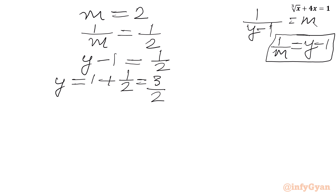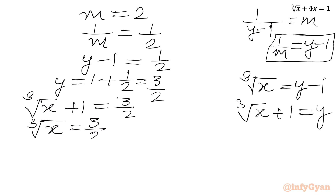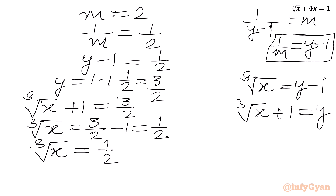Now y was also our substitution: cube root x equals y minus 1. So in place of y I can write cube root x plus 1. Setting cube root x plus 1 equal to 3 over 2 and subtracting 1 from both sides, cube root x equals 3 over 2 minus 1 equals one half. Cubing both sides, the cube root and cube cancel, giving our final answer x equal to 1 over 8.